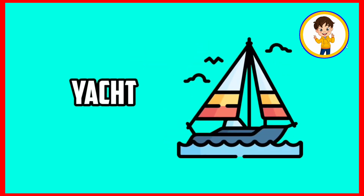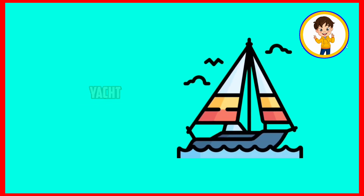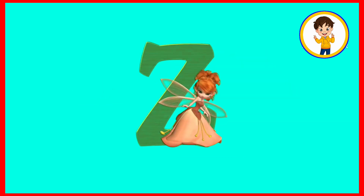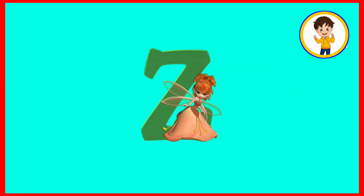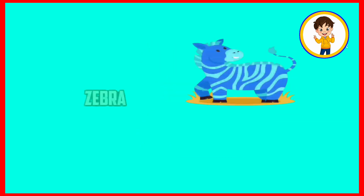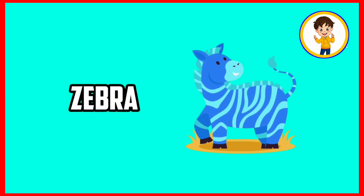Y. Y is for yash. Chaach means noka. Z. Z is for zebra. Zebra means zebra.